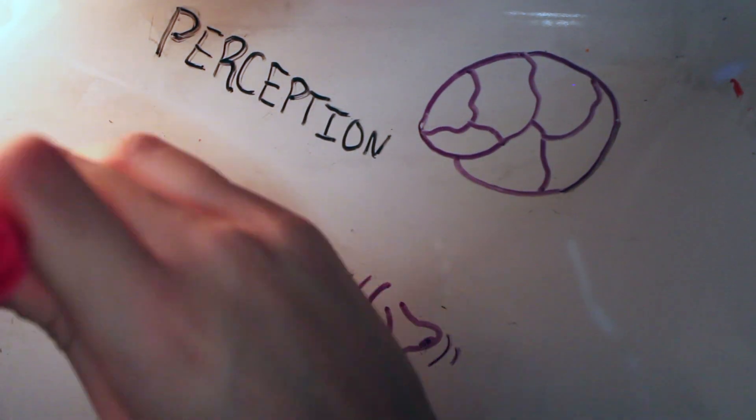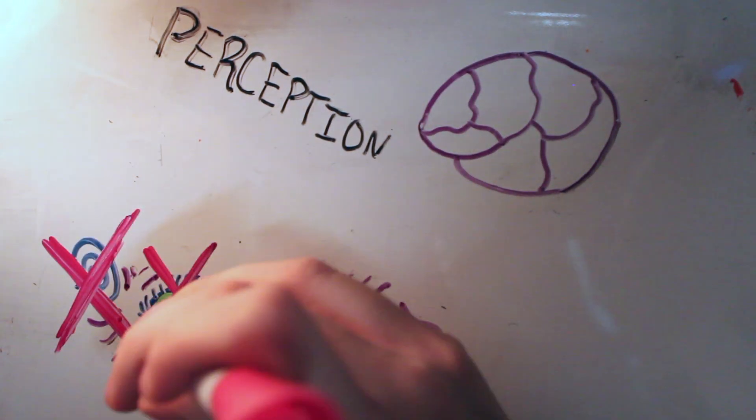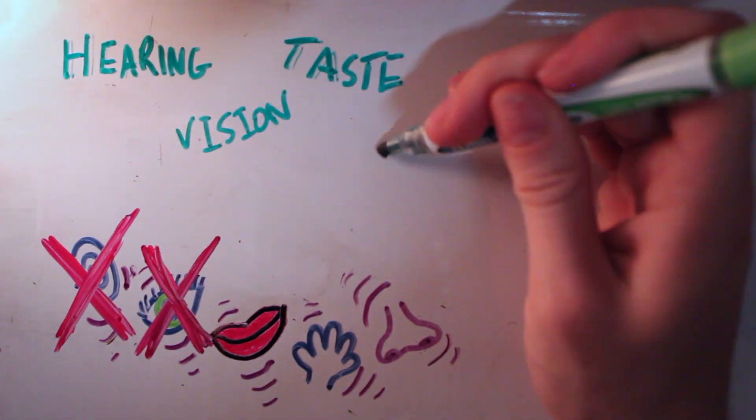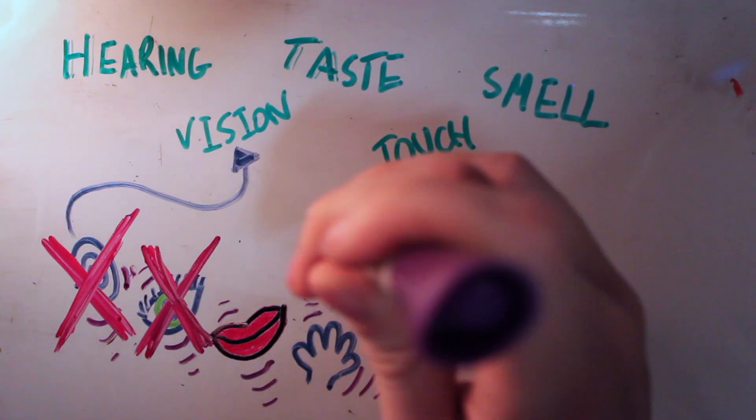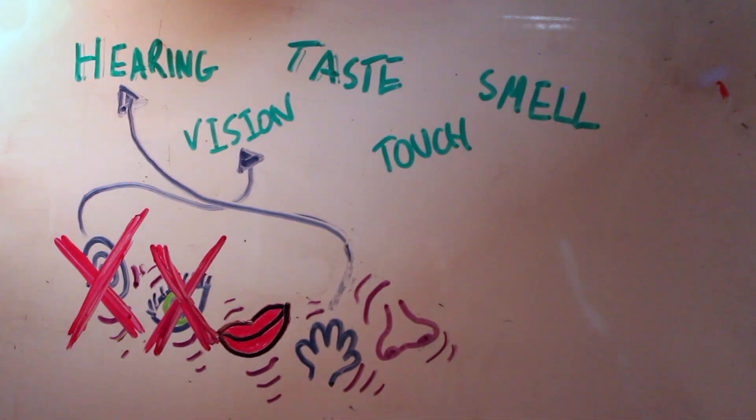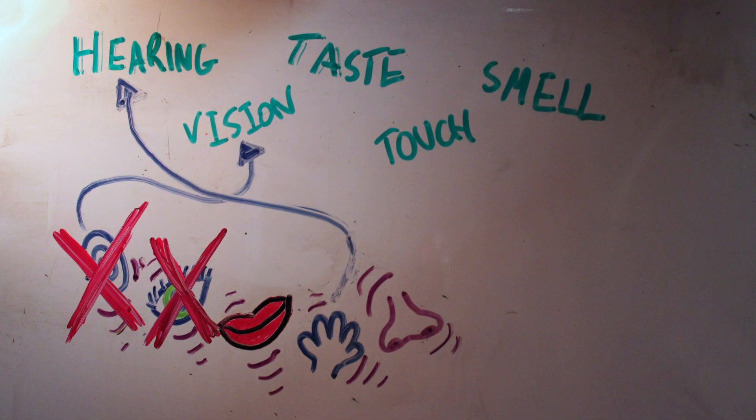If someone has a defect in one of the five senses, for example being deaf or blind, could it still be possible to perceive this information by substituting it with another one of the five senses? In other words, could it be possible to hear with the eyes or to see with the skin?